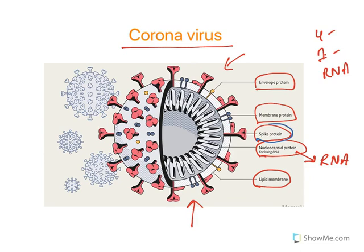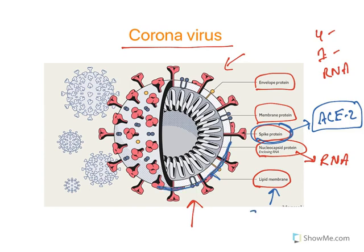The most important protein is the spike protein, which binds with ACE2 receptors on human cells, gaining access inside the cell — this is how it infects a human cell. Now look at the lipid membrane, which covers the entire virus. A simple soap solution can break down this lipid membrane. Hence washing our hands with soap is very important, because simple washing will kill all the virions present on our hands.